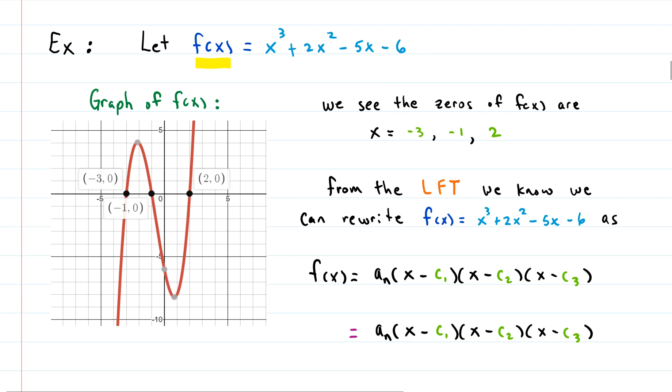graph this, we can see clearly that there's a root or solution or x-intercept of -3, -1, and positive 2. So we can see the zeros of the function are -3, -1, and 2.